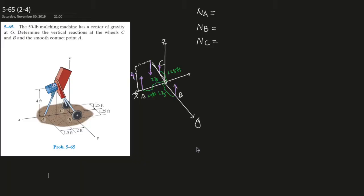I can assist you or tutor you more if you have questions, just email me. Problem 5-65, the fourth question in the second set of chapter five. The 50-pound washing machine has a center of gravity at G. Determine the vertical reactions at wheels C and B and the smooth contact point at A.